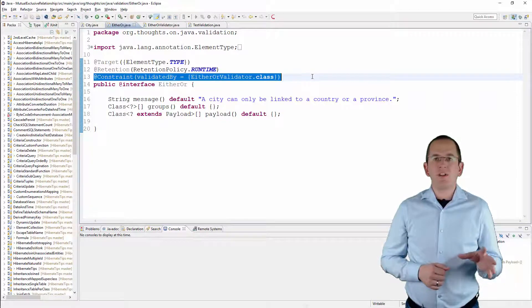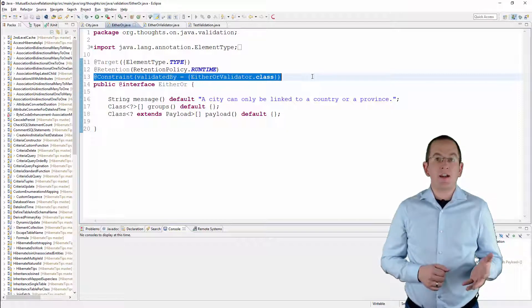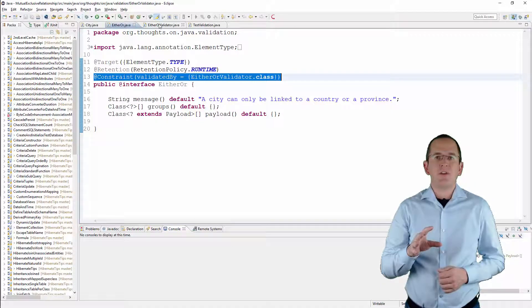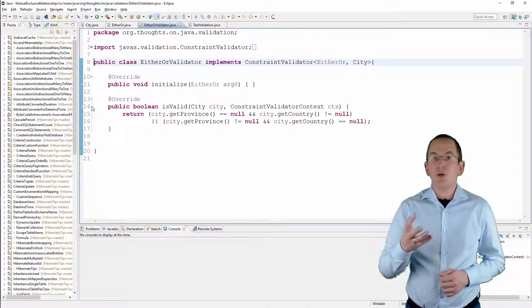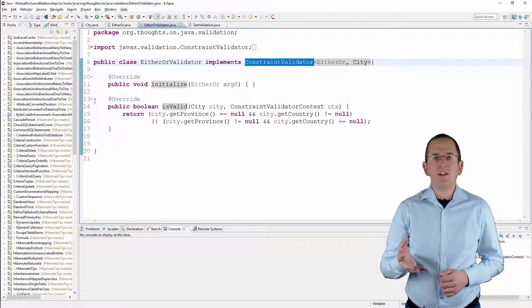The ConstraintValidation is defined by the BeanValidation specification and it references the class that implements the validation. The implementation of that class is pretty simple. You only need to implement the ConstraintValidator interface.